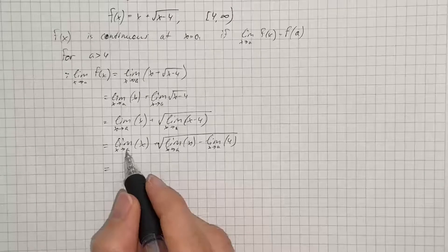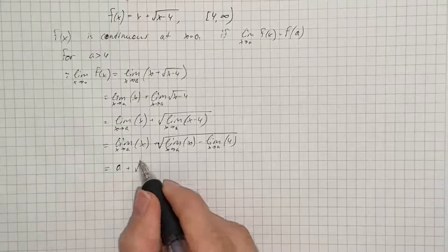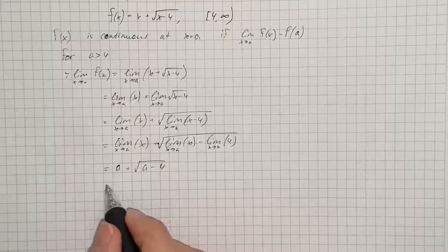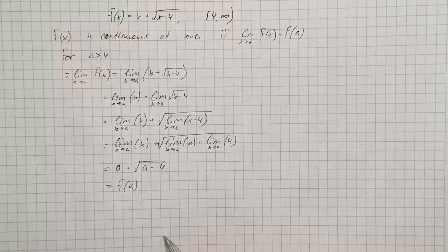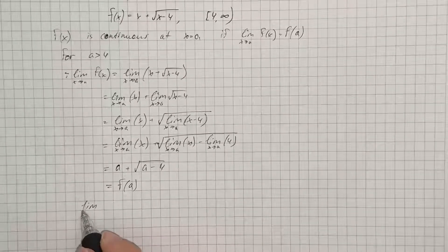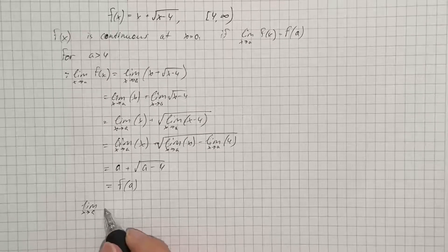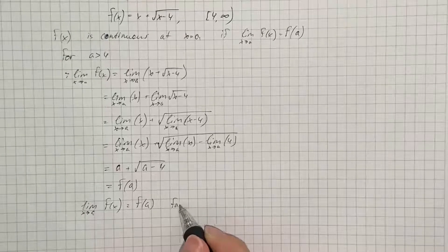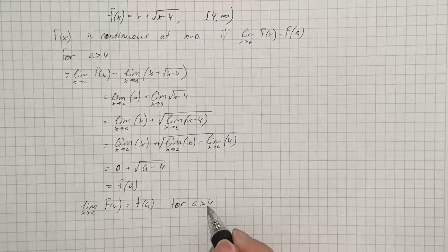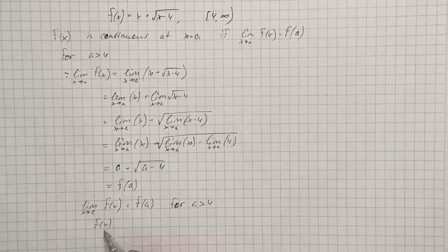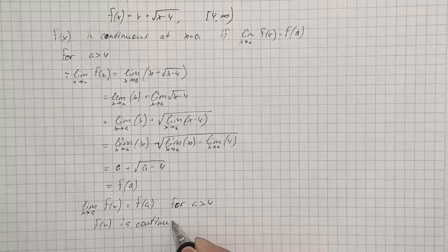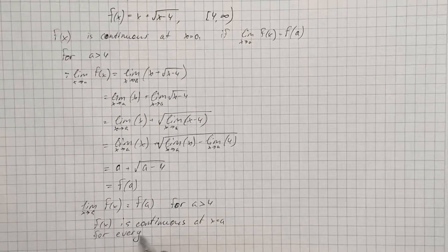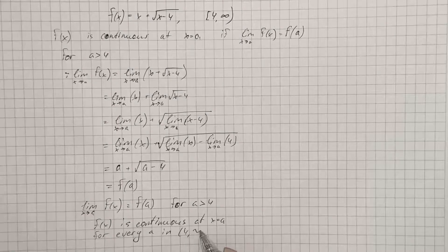We substitute x with a and get the first limit equals a, plus the square root of a minus 4, since the limit of a constant equals 4. That gives us our limit equal to the function evaluated at a. So the limit as x approaches a of f(x) equals f(a) for a greater than 4. Therefore f(x) is continuous at x = a for every a in the interval (4, ∞).